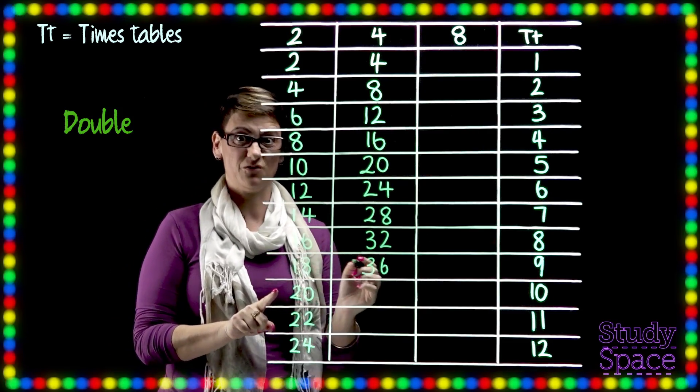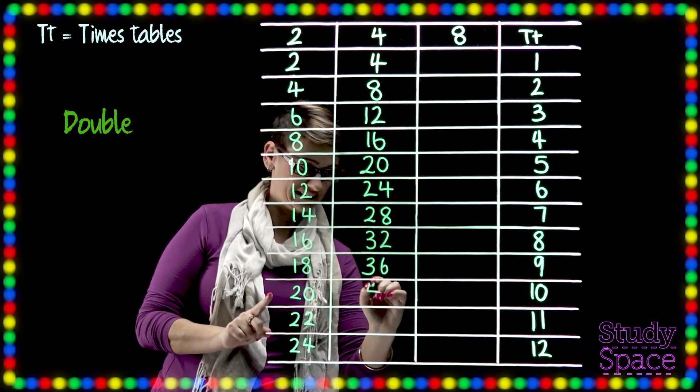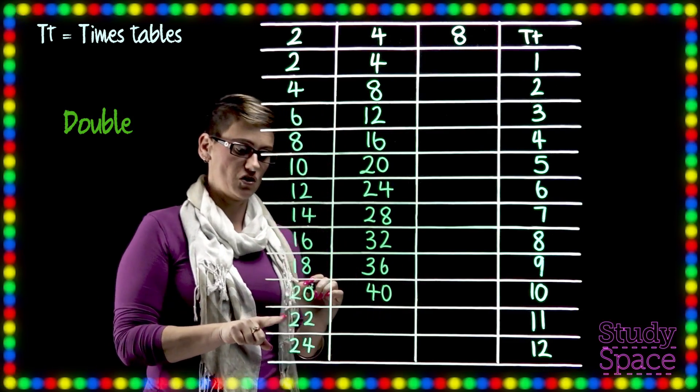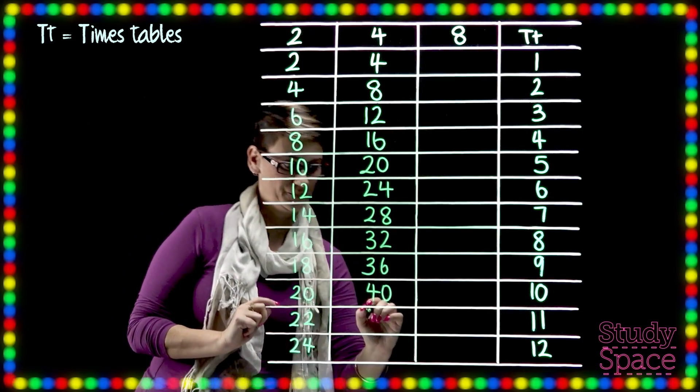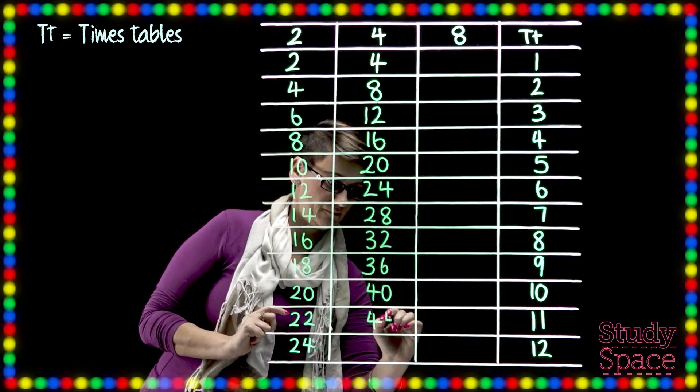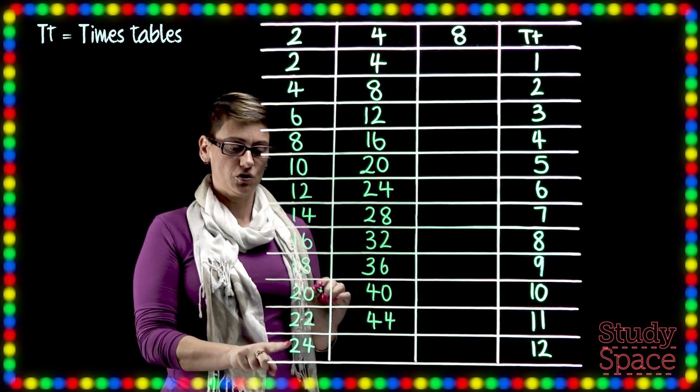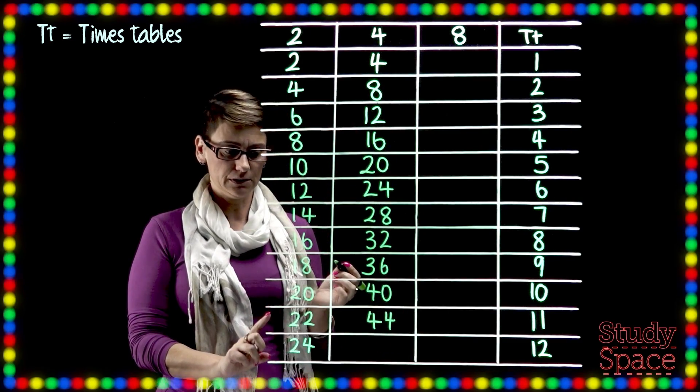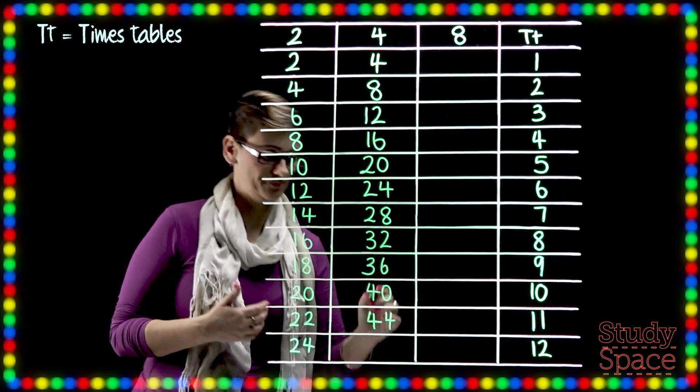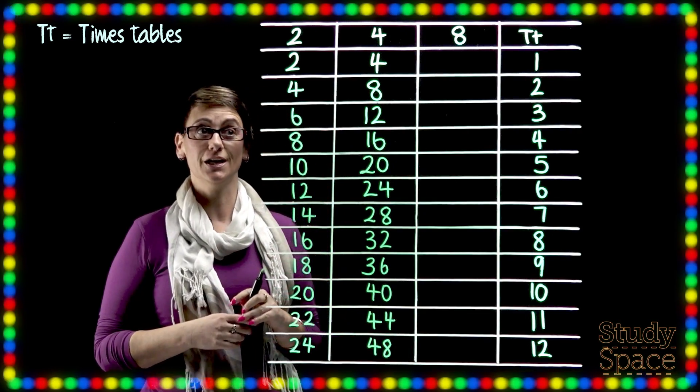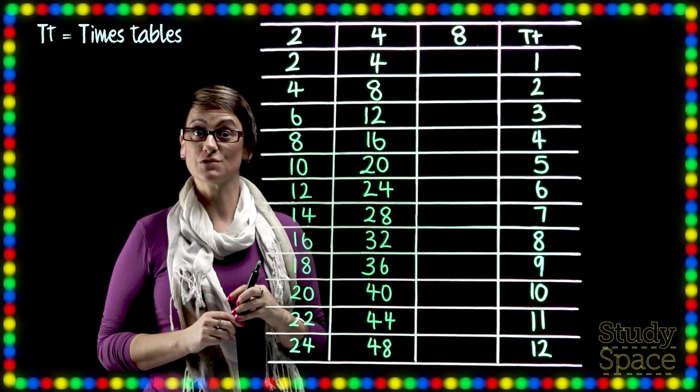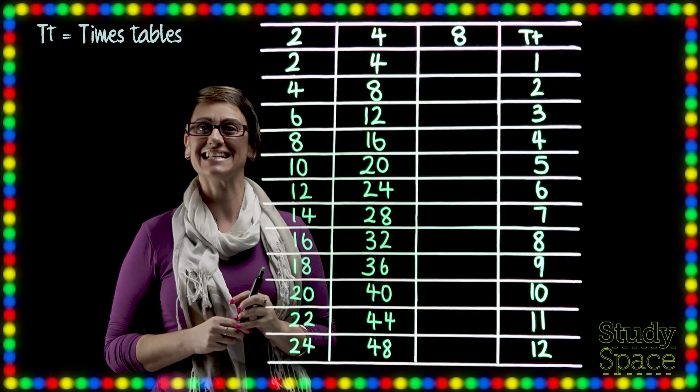Double 20 is 40. And then we've got 22 plus 22 is 44. And then we've got 24 doubled which is 48. How did you go boys and girls? Again make sure your 4 times tables are correct before we go on to the 8's.